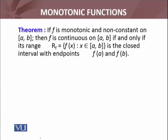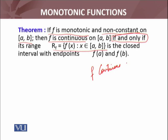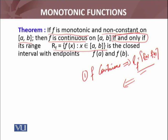The theorem states that if f is monotonic — either non-decreasing or non-increasing — and non-constant on the interval [a, b], then f is continuous. The range of f is the closed interval with endpoints f(a) and f(b). We have to show that: f is continuous implies range of f equals the closed interval [f(a), f(b)], and the other direction — if range of f is this closed interval, then f is continuous. This is the if and only if statement.